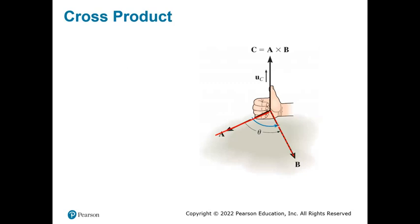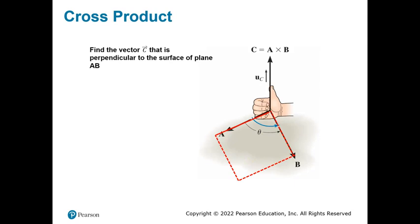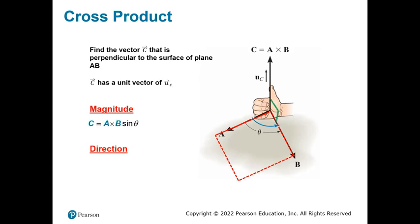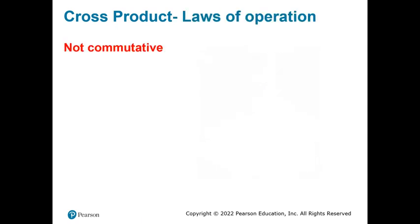Consider two vectors A and B. To find the moment, draw parallel lines to A and B to get the area of the parallelogram formed by them. Then draw a unit vector C perpendicular to that area — that gives the direction of the cross product. The cross product of A and B equals the magnitude A times B times sine theta, in the direction of unit vector C. Unlike the dot product, the cross product has a direction.